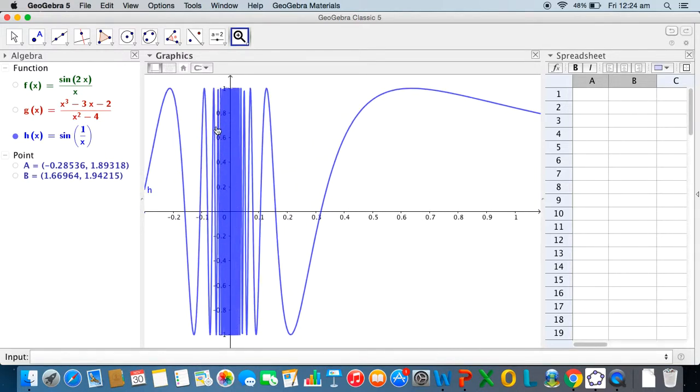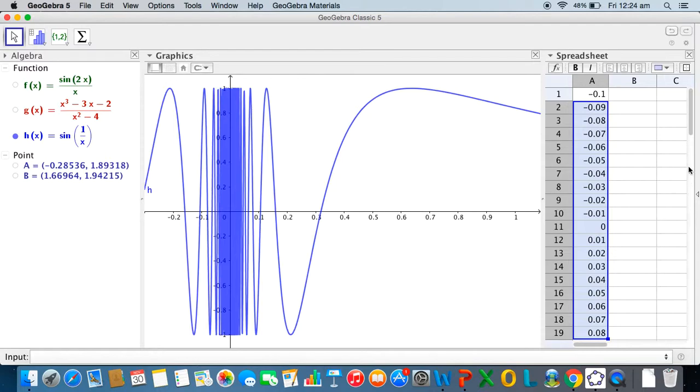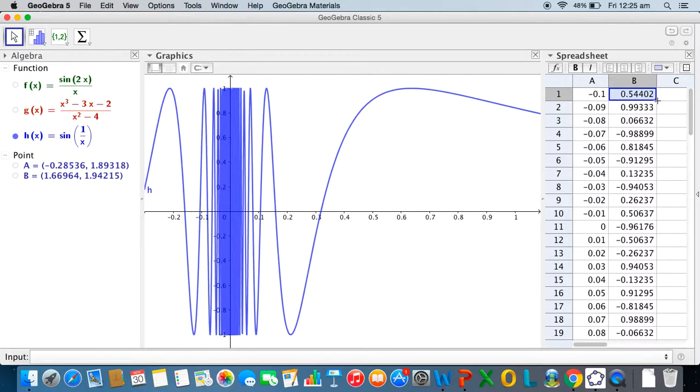And let us see what happens. I can use the zoom in option and keep zooming in at the origin. Notice that there are very quick oscillations around 0. So now suppose I enter say minus 0.1 here and I increase values of this by 0.01, and I go on to say 0.1, and now I'm going to enter the formula h.